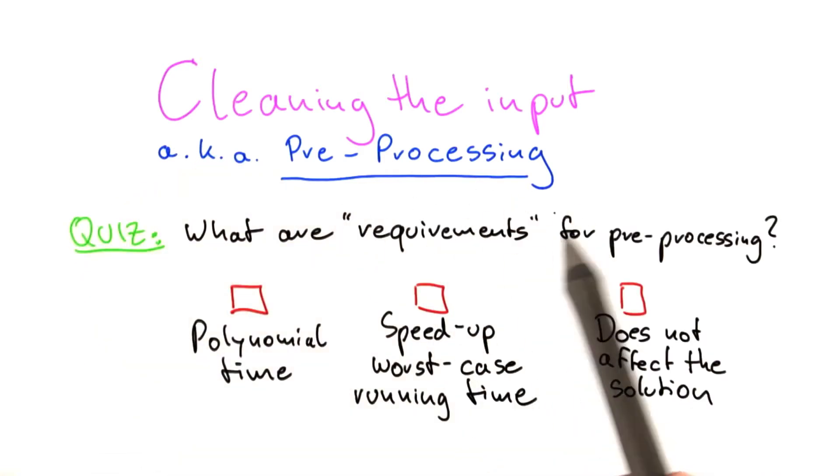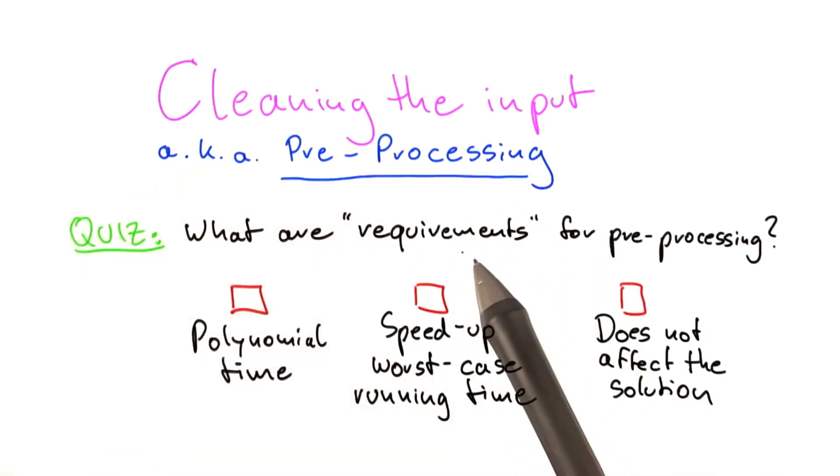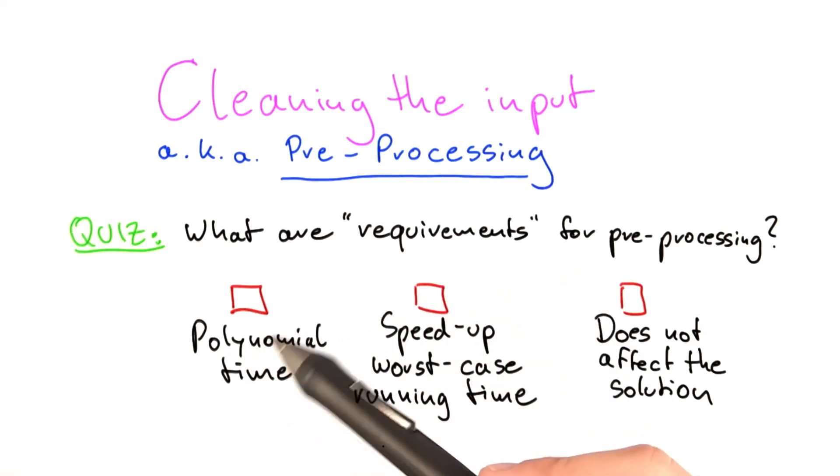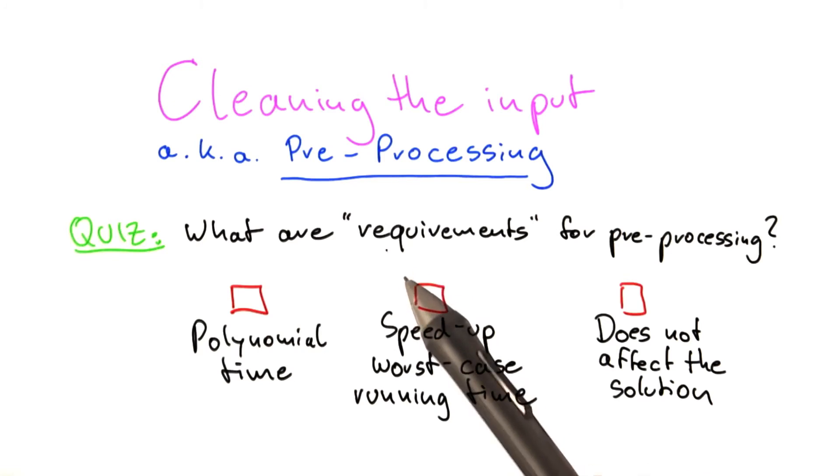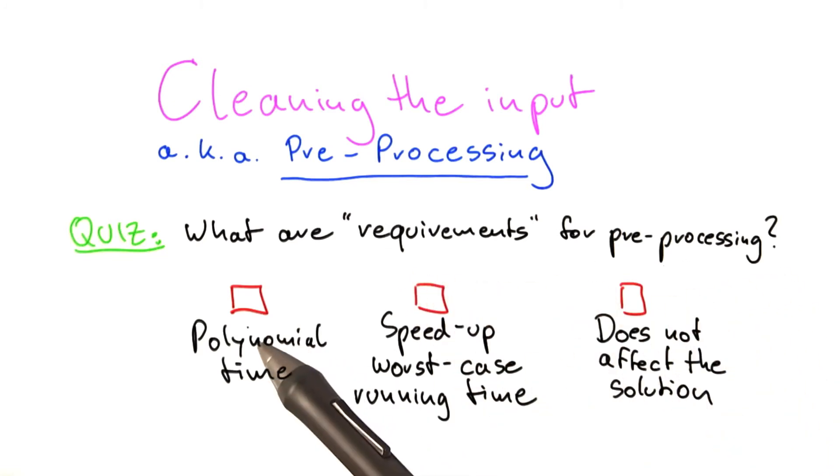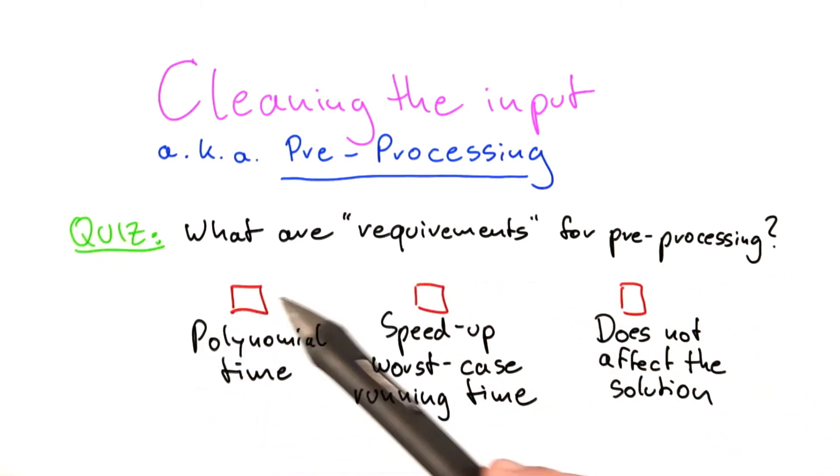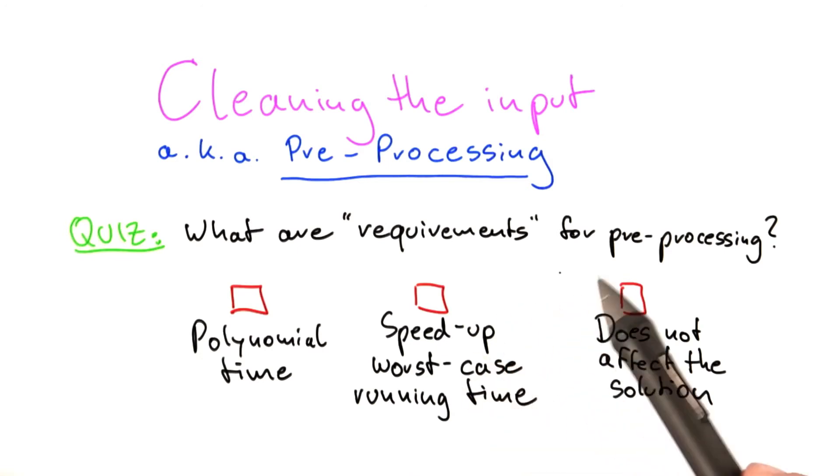Of course, since we're defining preprocessing, I write requirements here in brackets because it has a somewhat subjective component. But here's the three choices. So what would be kind of good requirements for preprocessing? The first one is that it must run in polynomial time. The second one is that preprocessing should always speed up the running time, which means it would speed up the worst-case running time.